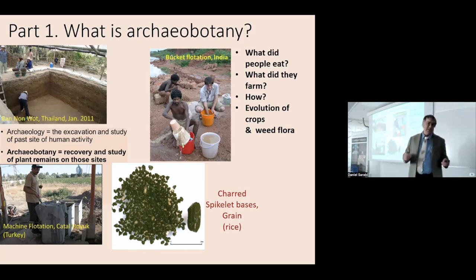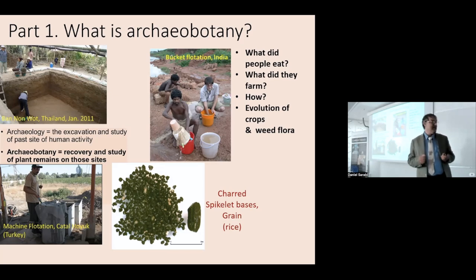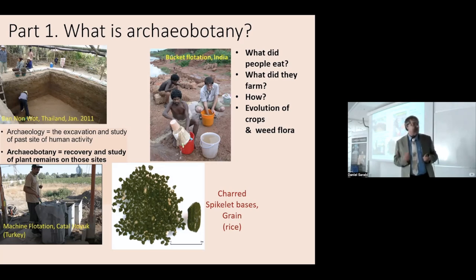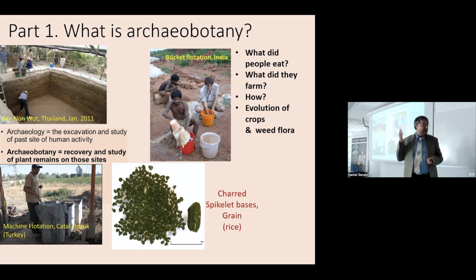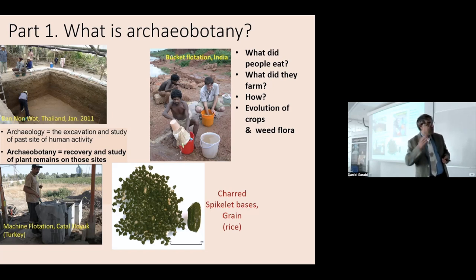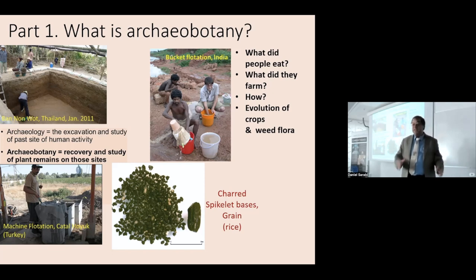Most often we deal with material that's preserved by being charred in the past, which differentially destroys some evidence. That means we're left with woody parts, hard seeds, nutshells, hard bits of chaff, and things like that. We recover that material by concentrating it through flotation — mixing it through water and using buoyancy. There are pictures of a machine flotation system at Çatalhöyük in Turkey, and bucket flotation in Orissa in eastern India. It's a very low-tech method of concentrating the charred material by catching it on fine sieves.